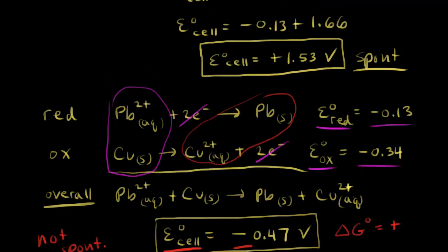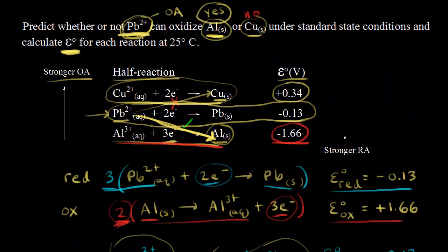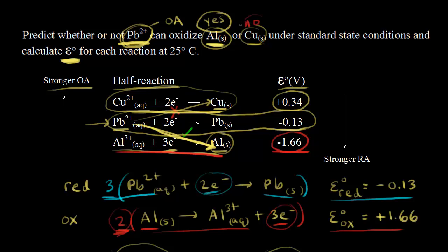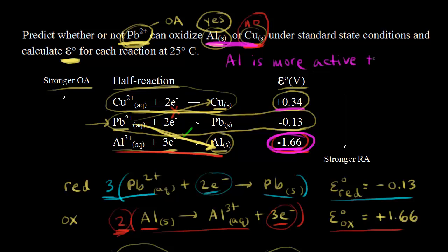We've confirmed that Pb²⁺ will not oxidize solid copper — not a spontaneous reaction. Aluminum has a more negative standard reduction potential than copper, so aluminum is more easily oxidized. We say aluminum is more active than copper. This connects to the activity series in general chemistry, which can be explained using standard reduction potentials.